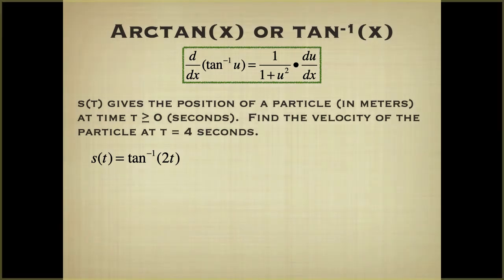So we have v of t, and I'm going to write it this way, equals s prime of t equals, using our formula over here, we have 1 over 1 plus u squared, and u is 2t. The u is 2t, the derivative of 2t is just 2. So we're multiplying by 2.